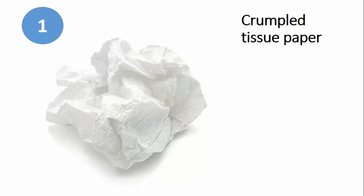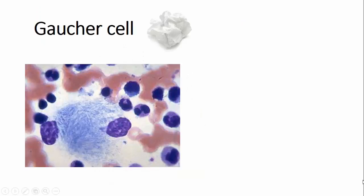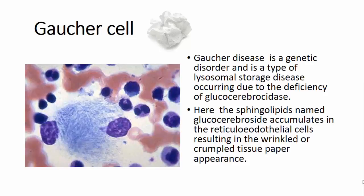The first one is crumpled tissue paper. Gaucher's cell is the only cell compared to the crumpled tissue paper appearance, found in Gaucher's disease — a genetic disorder and a type of lysosomal storage disease due to deficiency of glucocerebrosidase. Here, the sphingolipid glucocerebroside accumulates in reticuloendothelial cells, resulting in the wrinkled or crumpled tissue paper appearance.